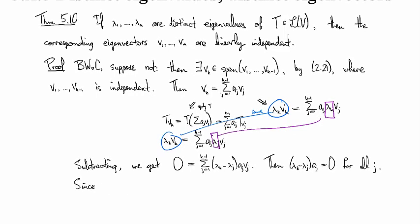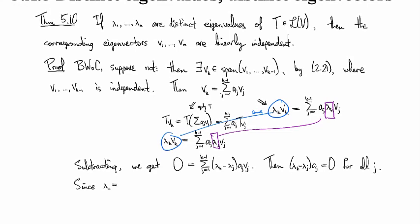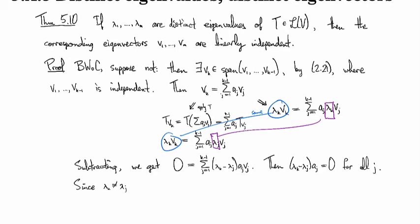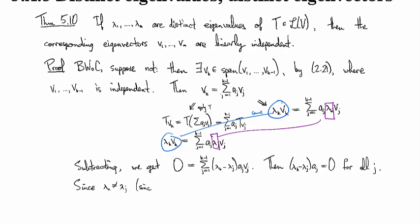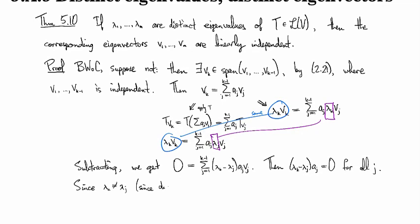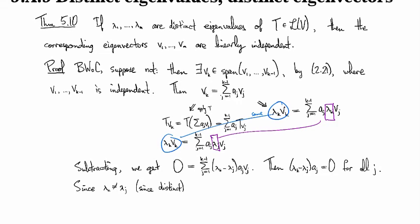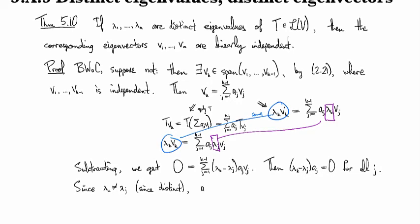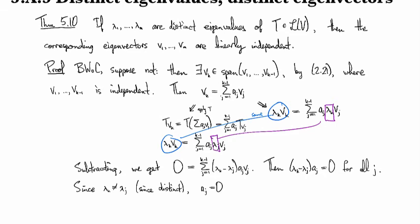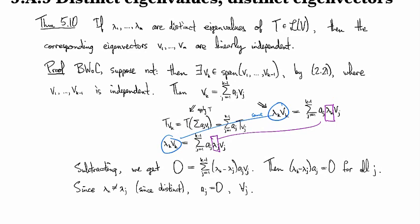Since lambda_k is not equal to lambda_j by our hypothesis about them being distinct, we have that a_j has to equal zero for all j.